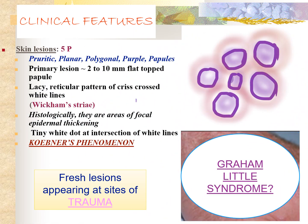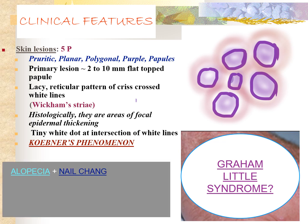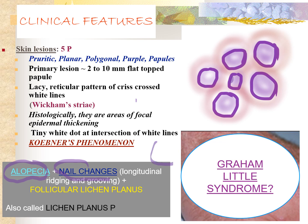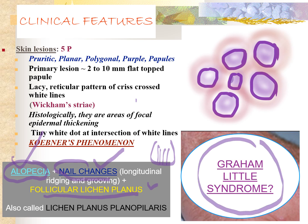Another associated term is Graham-Little syndrome. When lichen planus of the scalp occurs along with alopecia (hair loss) and nail changes such as ridging and grooves, these three features together — follicular lichen planus, alopecia, and nail changes — are called Graham-Little syndrome. This is also called lichen planopilaris. So two syndromes associated with lichen planus are Grinspan syndrome and Graham-Little syndrome.